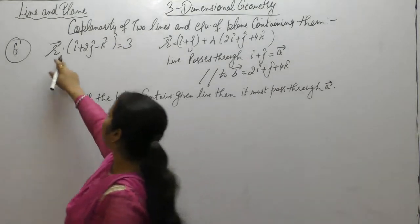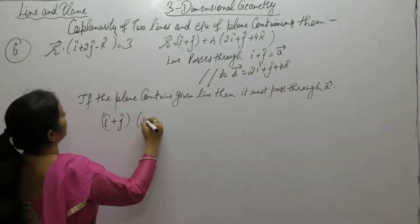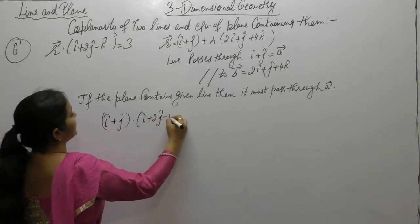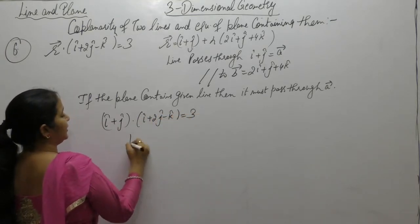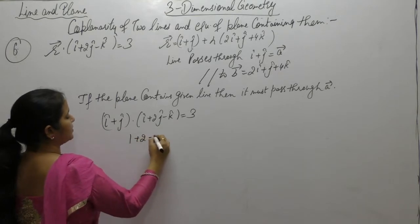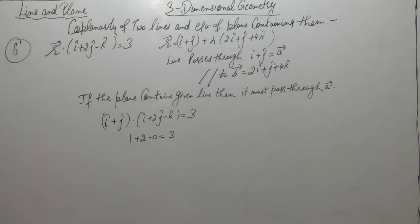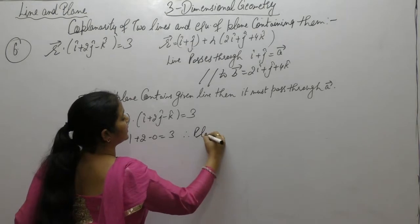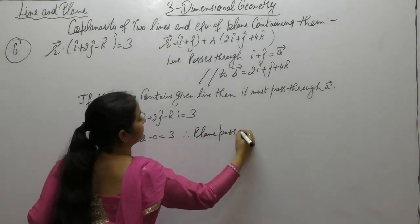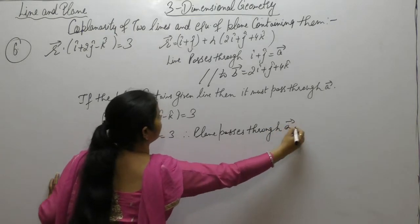If the plane contains the given line, it must pass through a vector. So instead of r vector, put the value of a vector: (i plus j) dot (i plus 2j minus k) equals 3. This gives 1 plus 2 minus 0, which equals 3. That is true. Therefore, the plane passes through a vector.